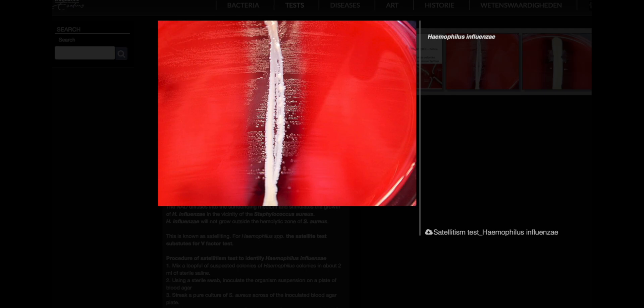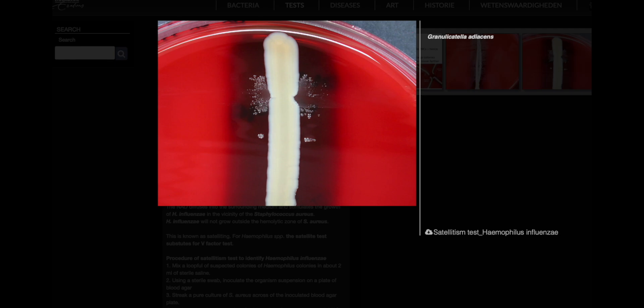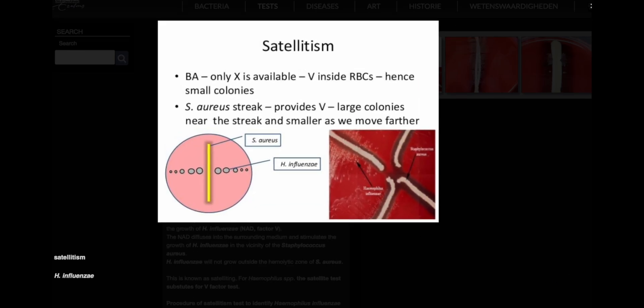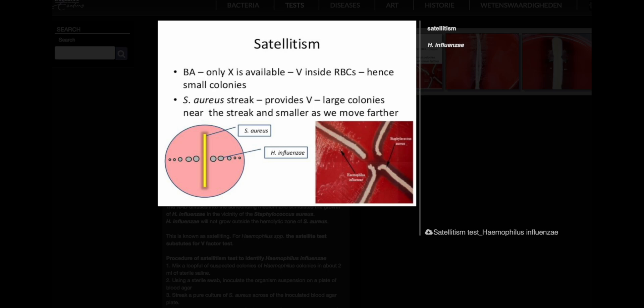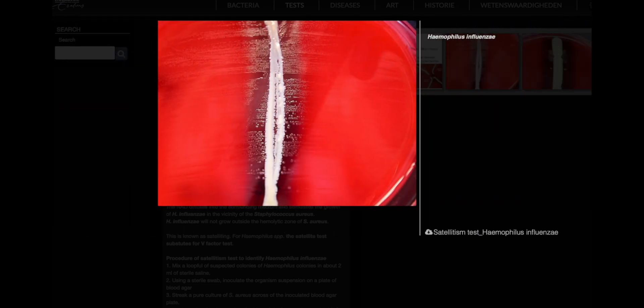Procedure of the Satellitism Test: Suspend a loopful of suspected Haemophilus colonies in about 2 ml of sterile saline. Using a sterile swab, inoculate the suspension onto a blood agar plate. Streak a pure culture of S. aureus across the inoculated blood agar plate. Incubate the plate in a carbon dioxide-enriched atmosphere at 35 to 37 degrees Celsius for 18 to 24 hours. Examine the culture plate for growth in satellite colonies.